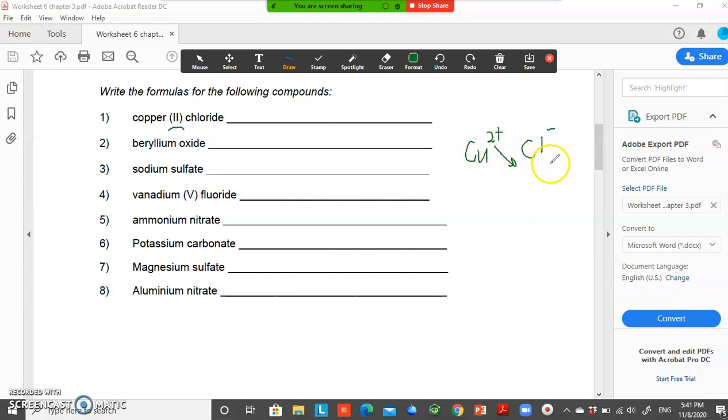What you need to do next is to do the crossover by taking the number of charge and bringing it to the bottom of chlorine. One charge of chlorine will bring to the bottom of copper. The number of charge will be the number of the subscript of each element. Therefore, the formula of copper(II) chloride will be CuCl2.